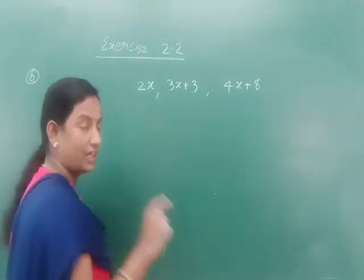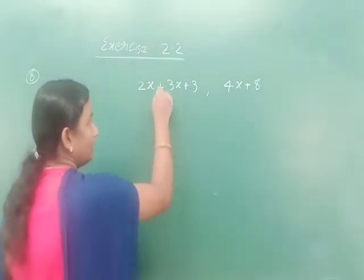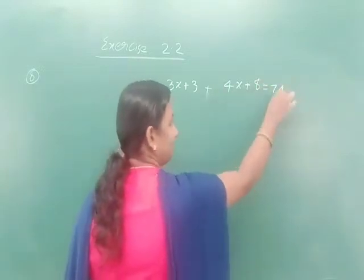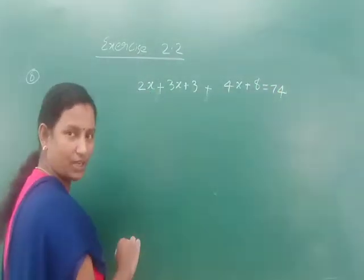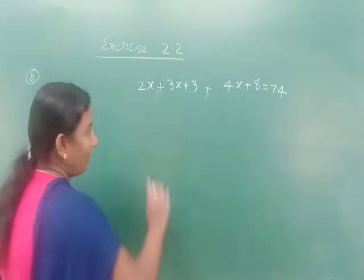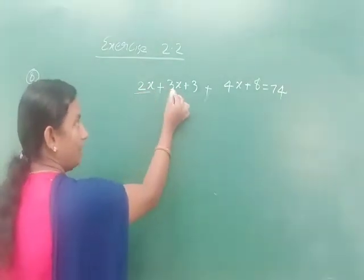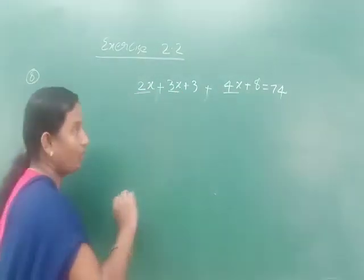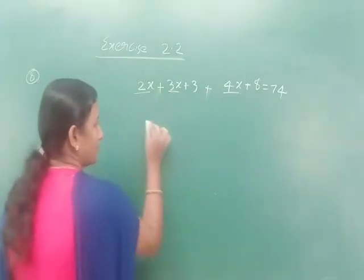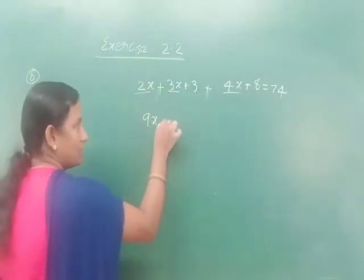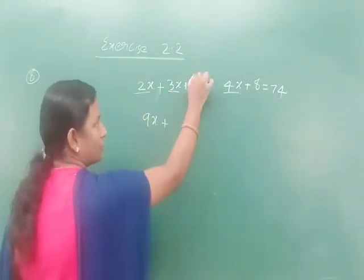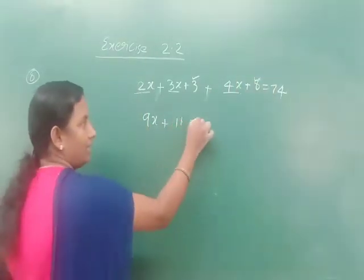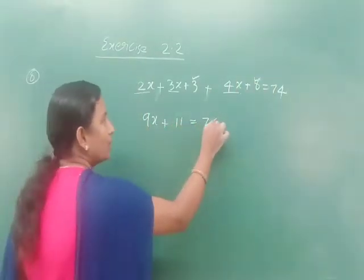The sum is given as 74. Adding the like terms: 2x + 3x + 4x = 9x. Adding the constants: 3 + 8 = 11. So we get 9x + 11 = 74.